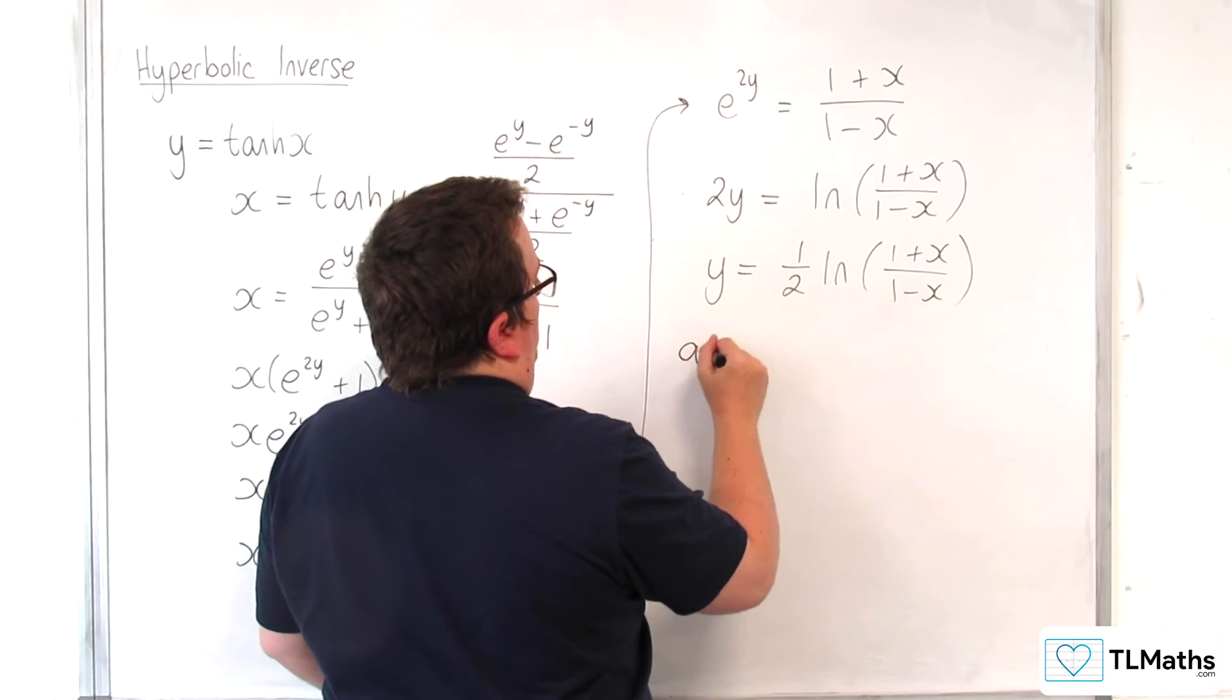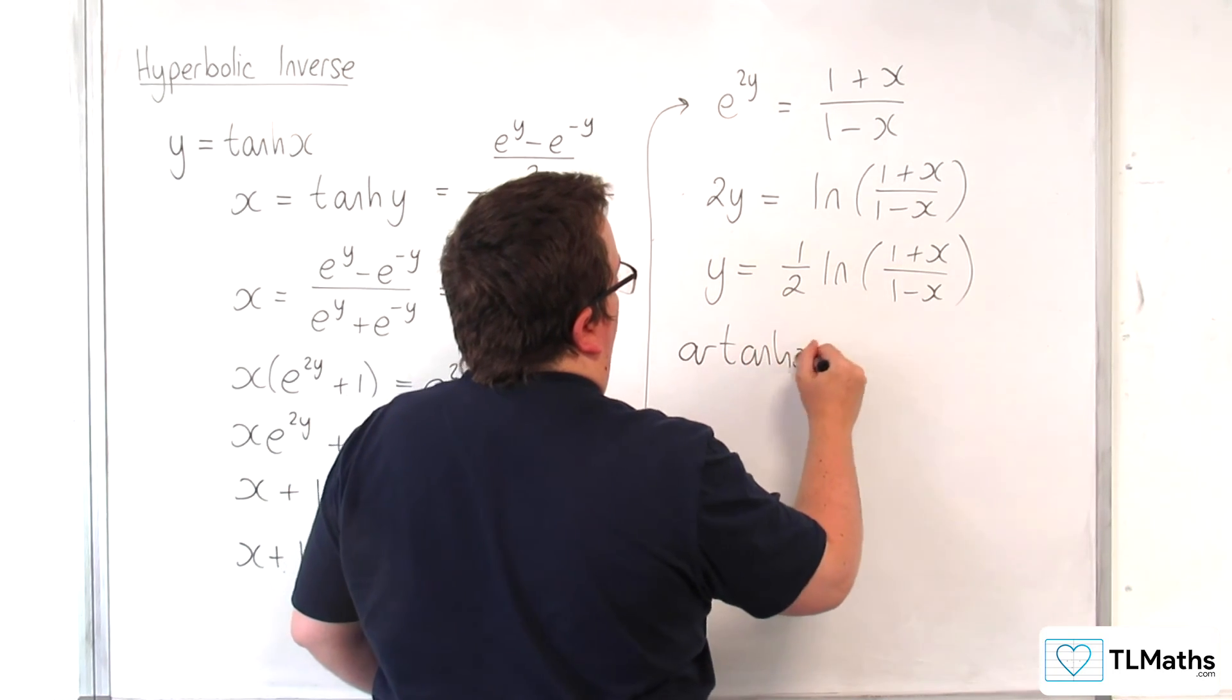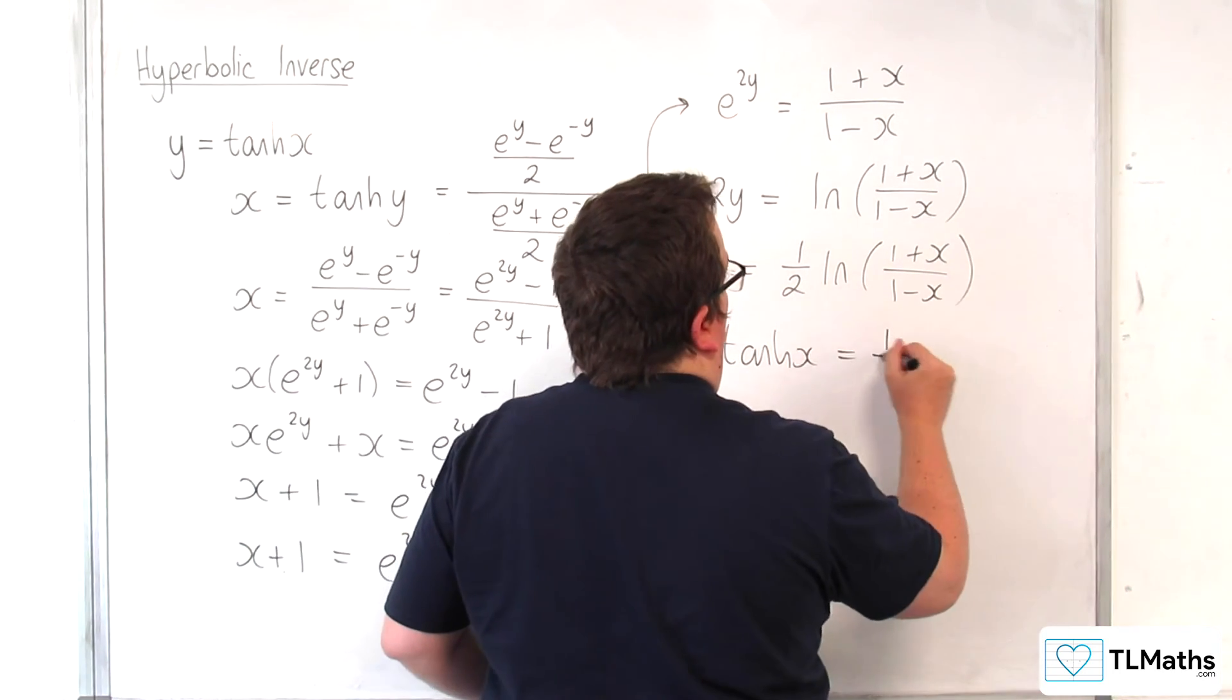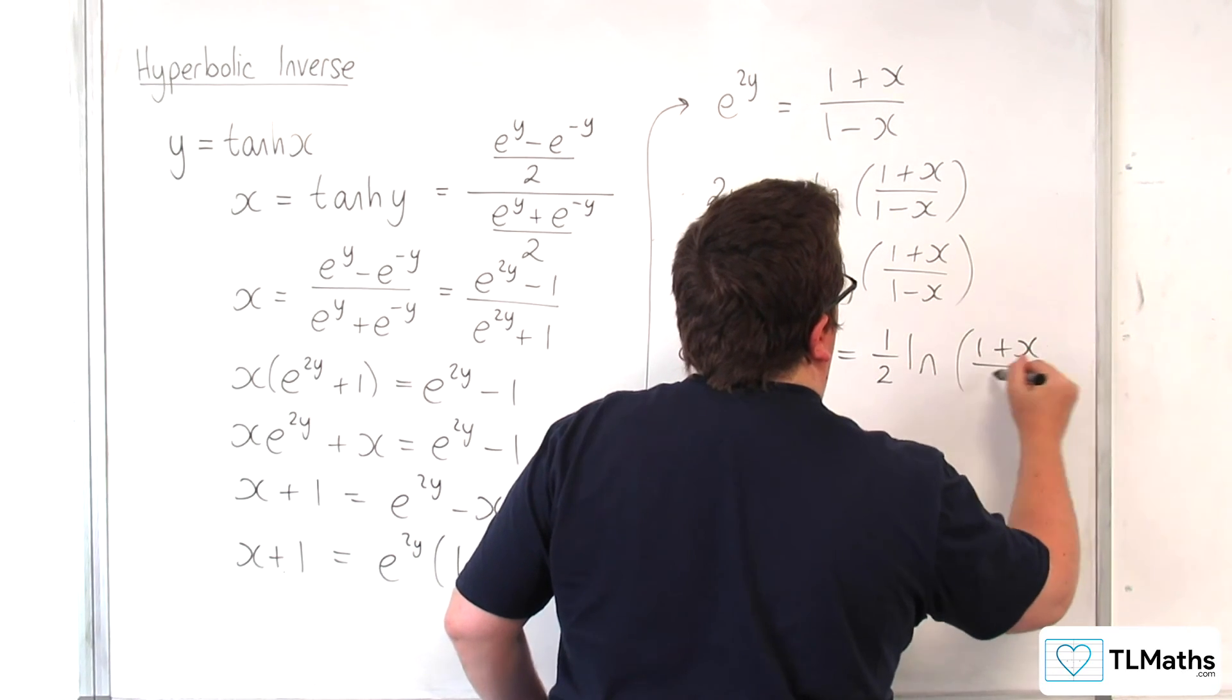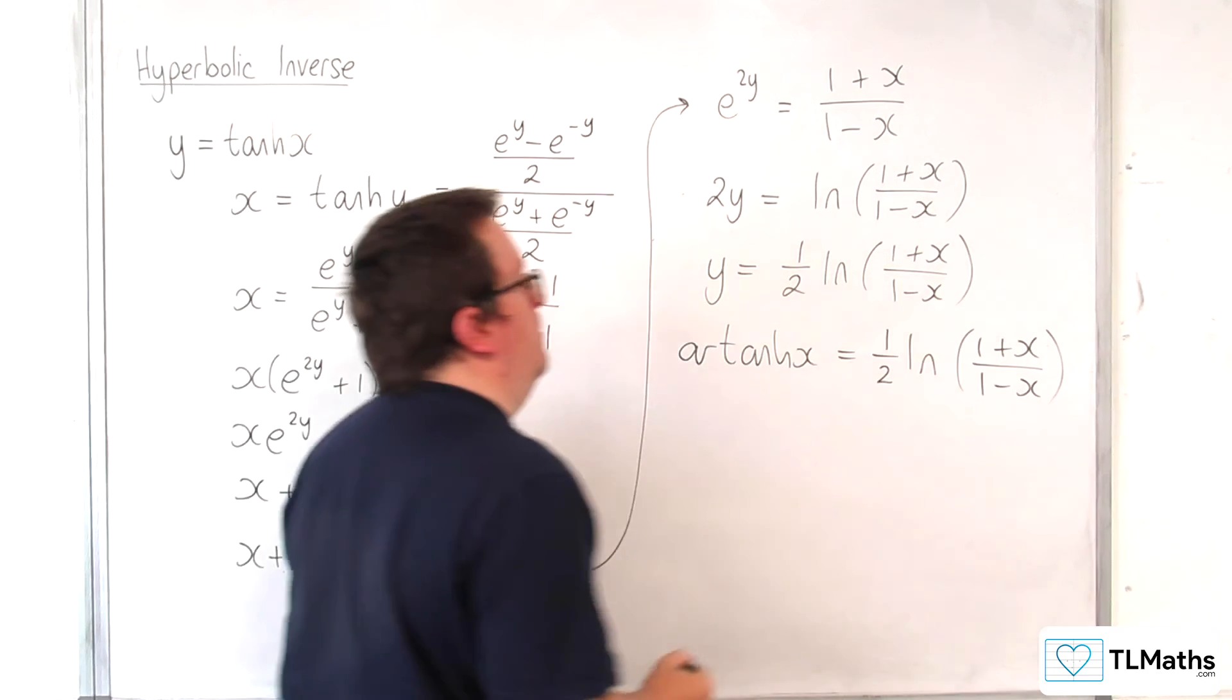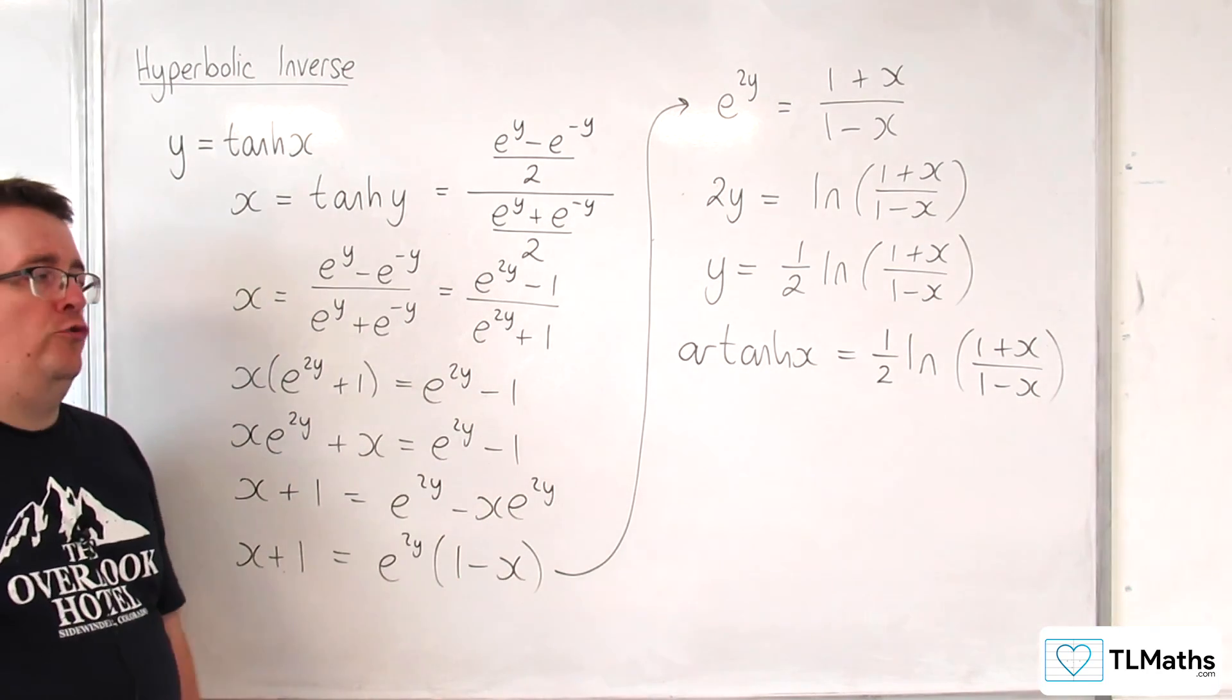And so arctanh of x is equal to 1 half the natural log of 1 plus x over 1 minus x. And that's its logarithmic form.